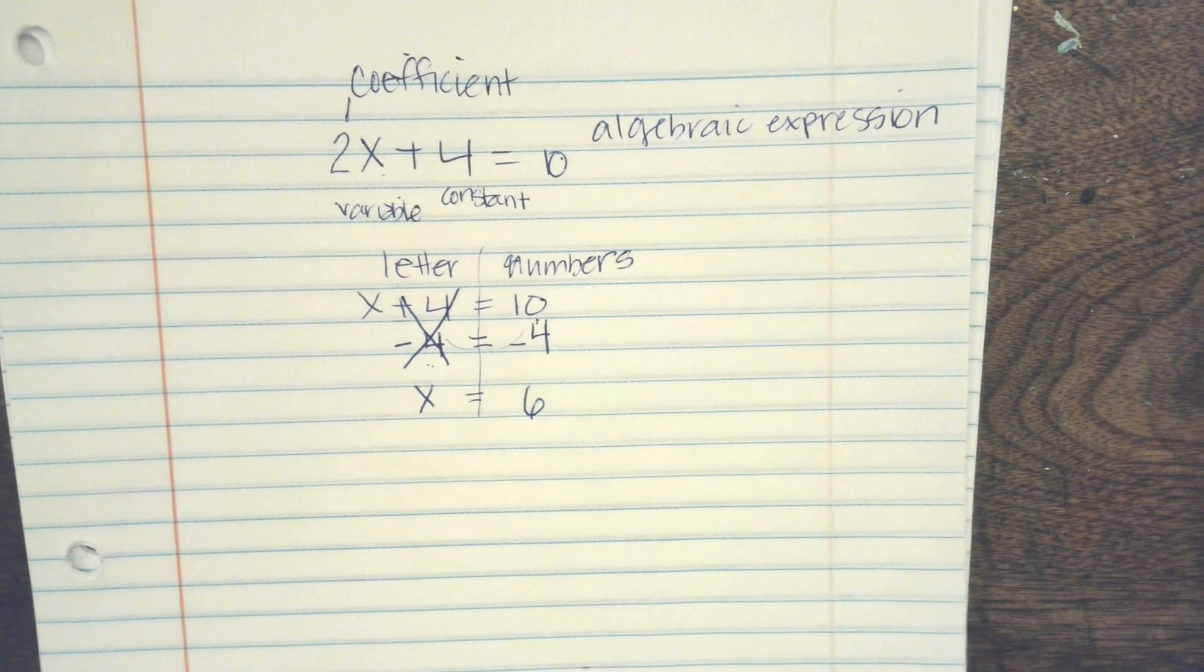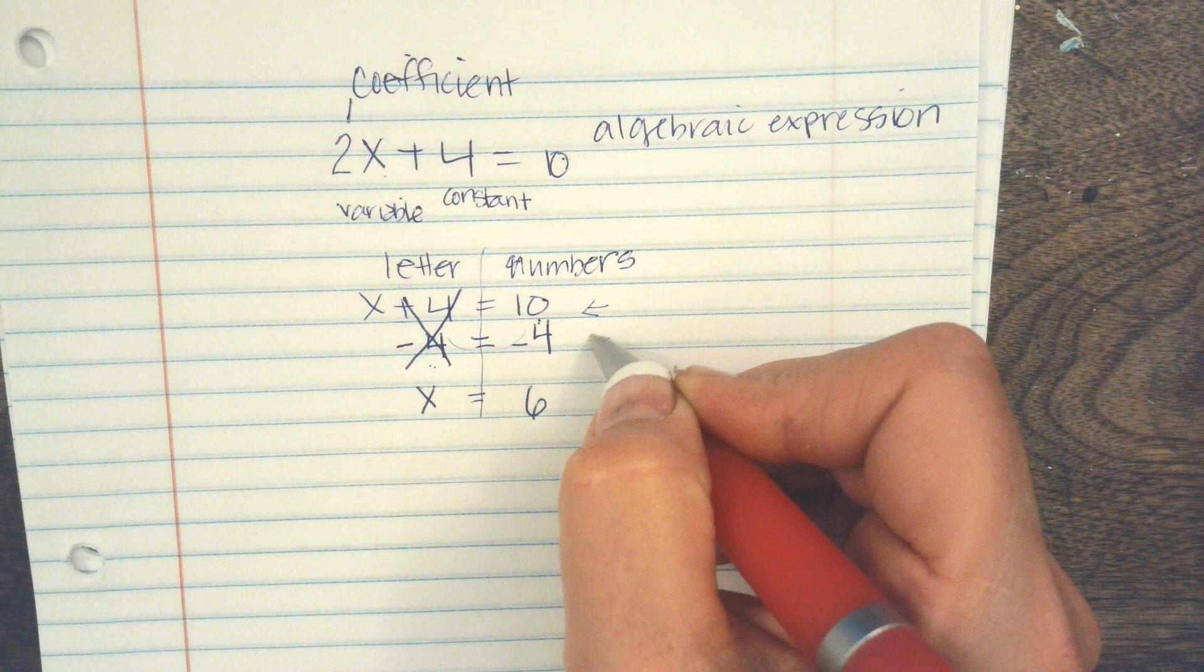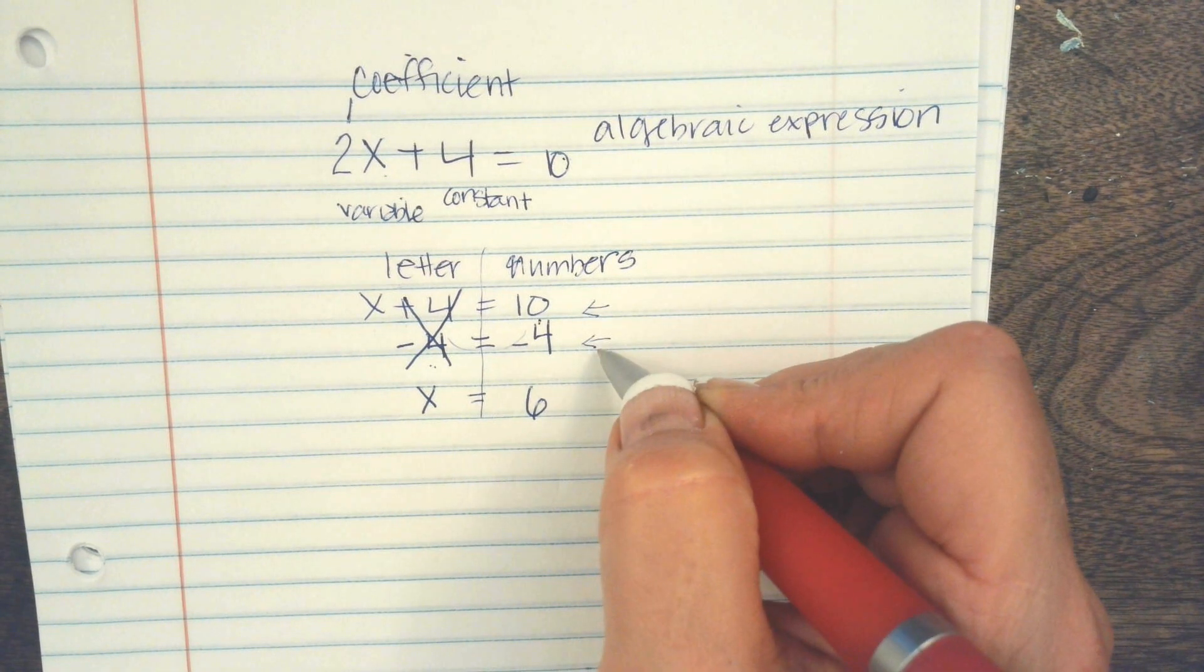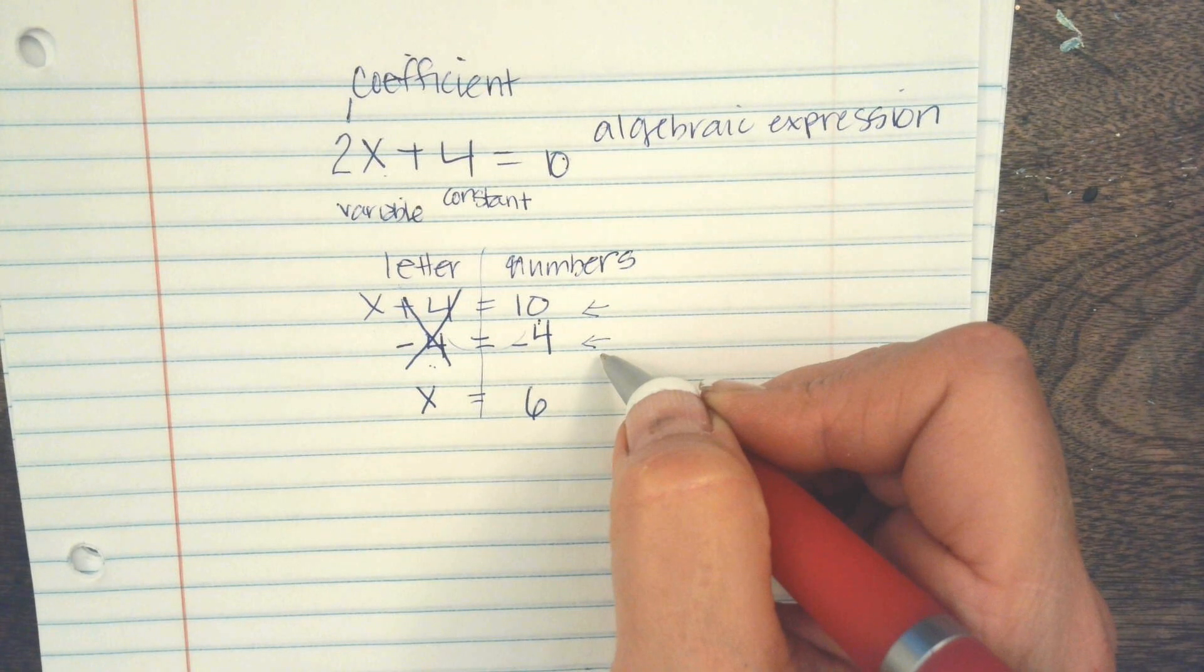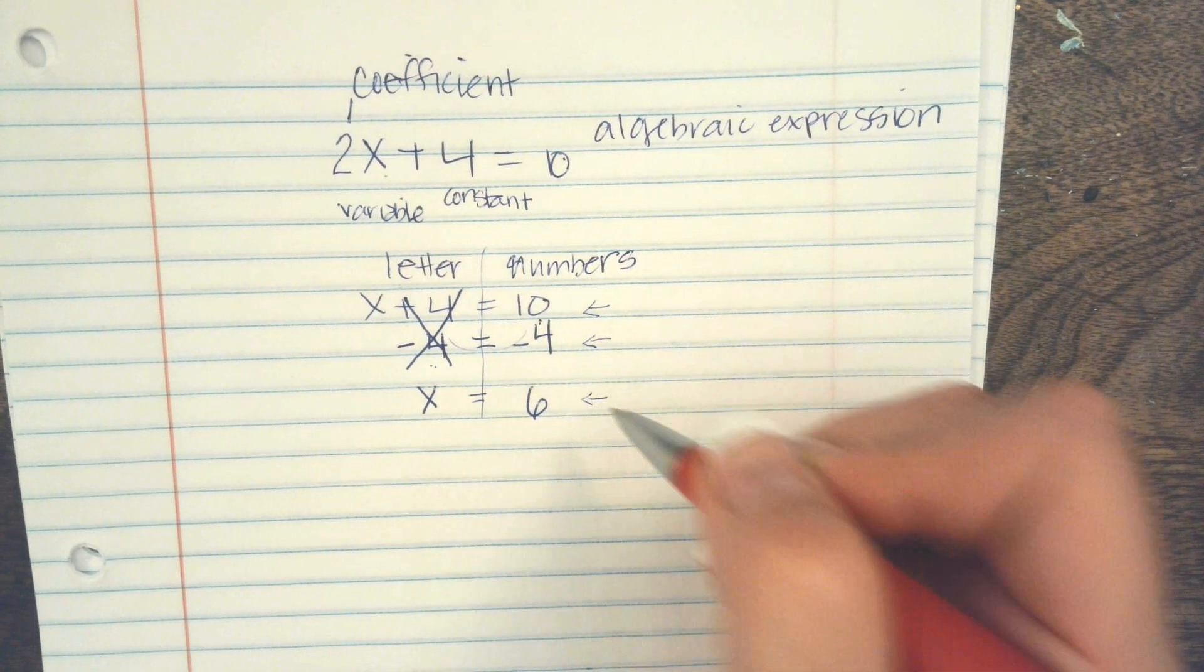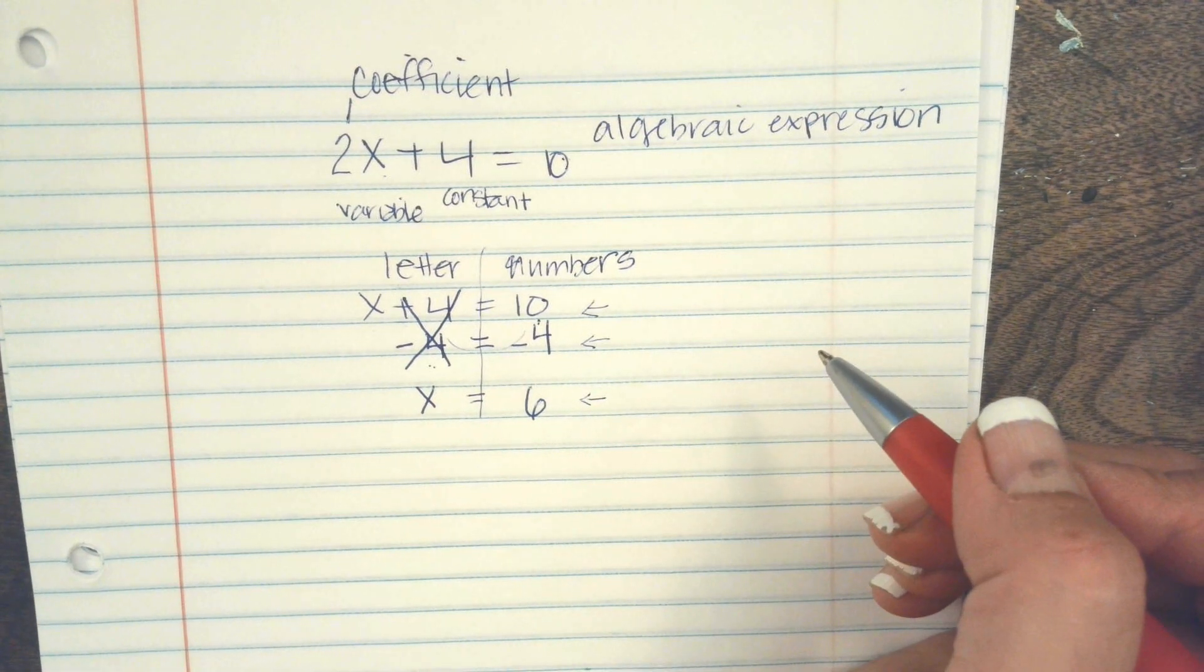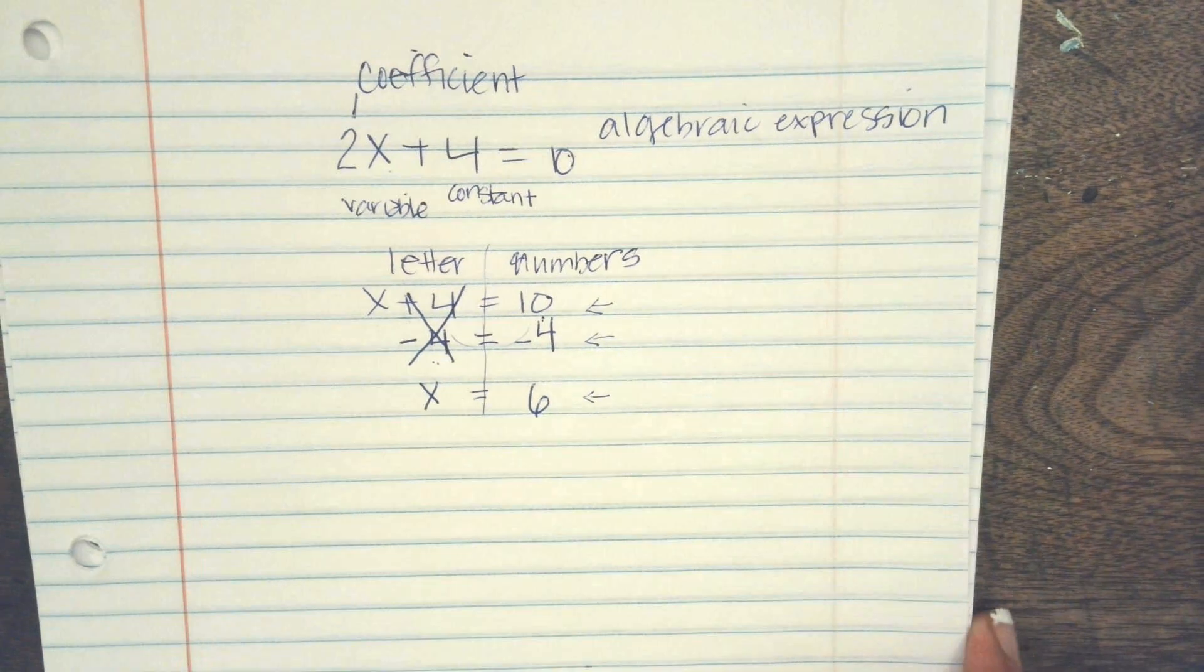So this is the process. We first write the equation out. We do the opposite of what they're doing to get letters on one side and numbers on the other. And then we solve the problem. So it has to look like this exactly every single time.